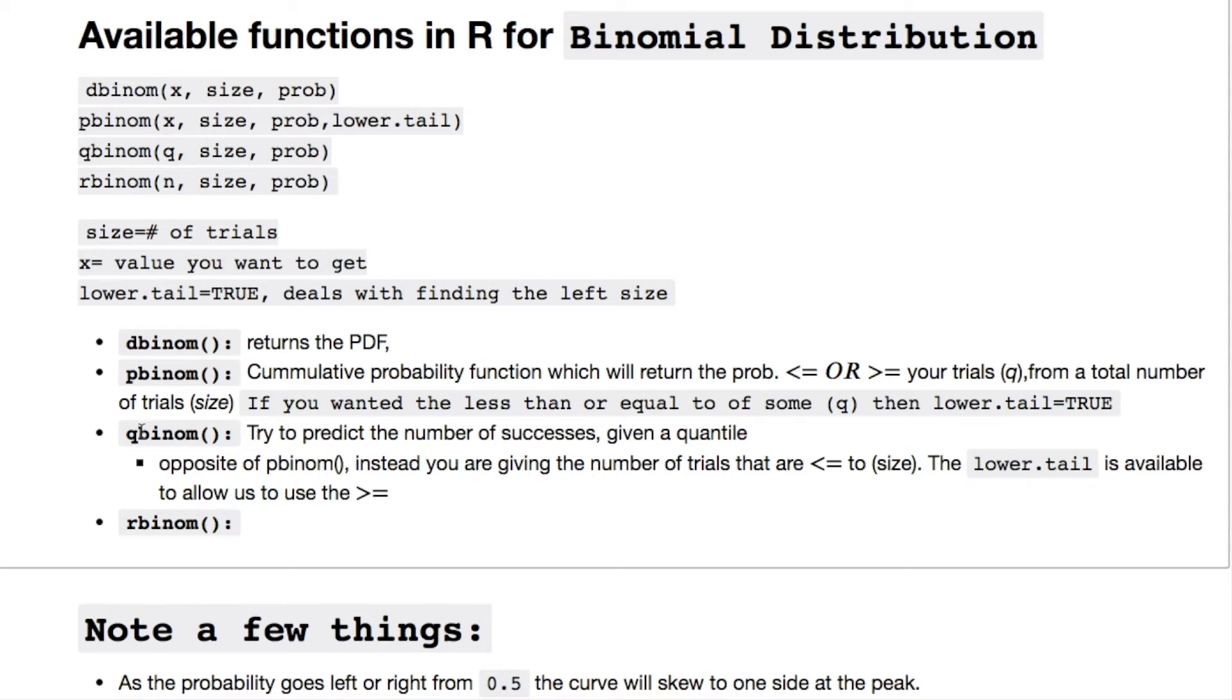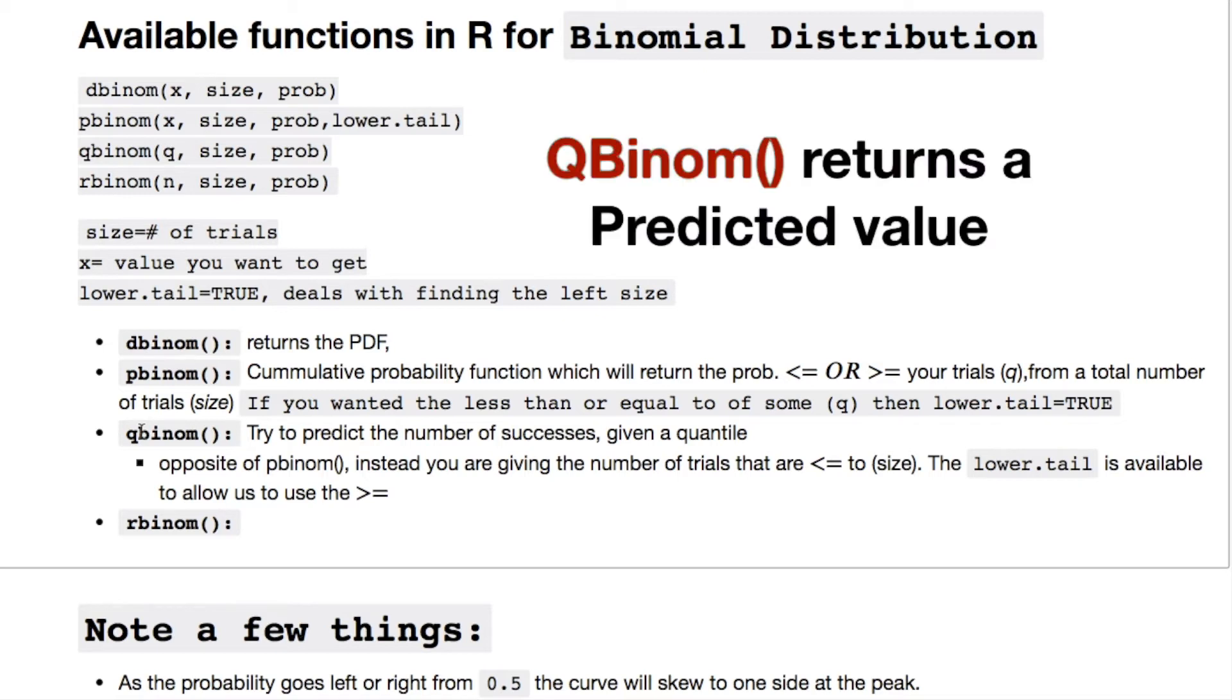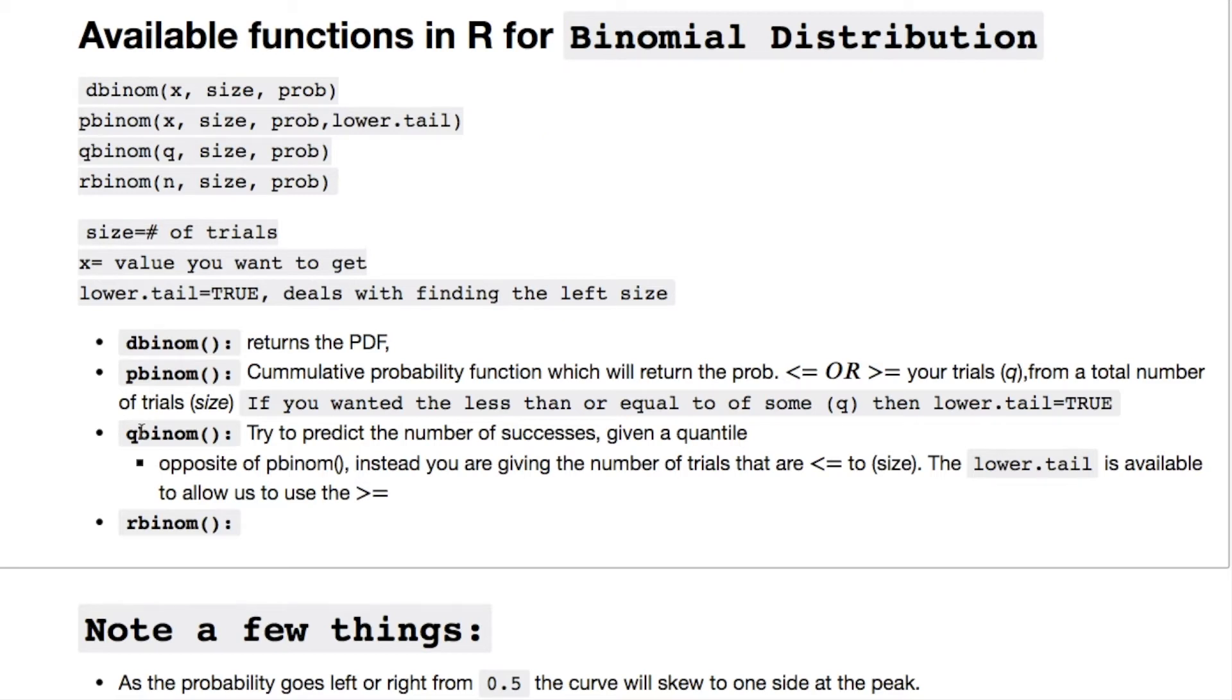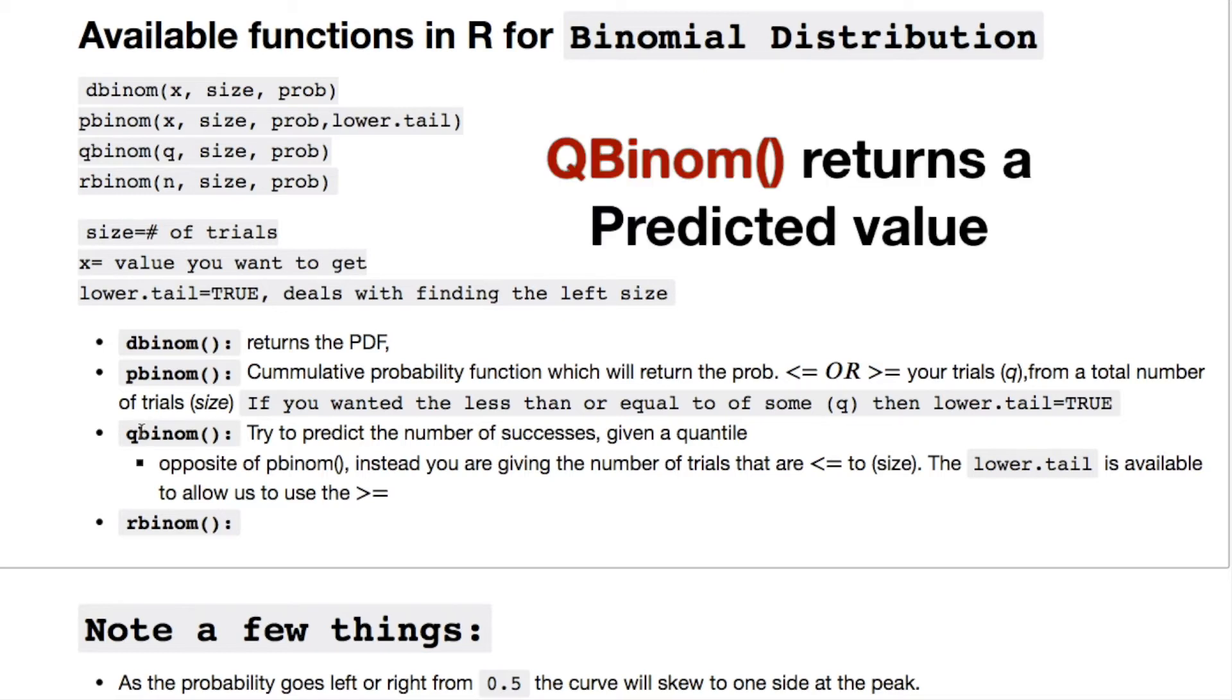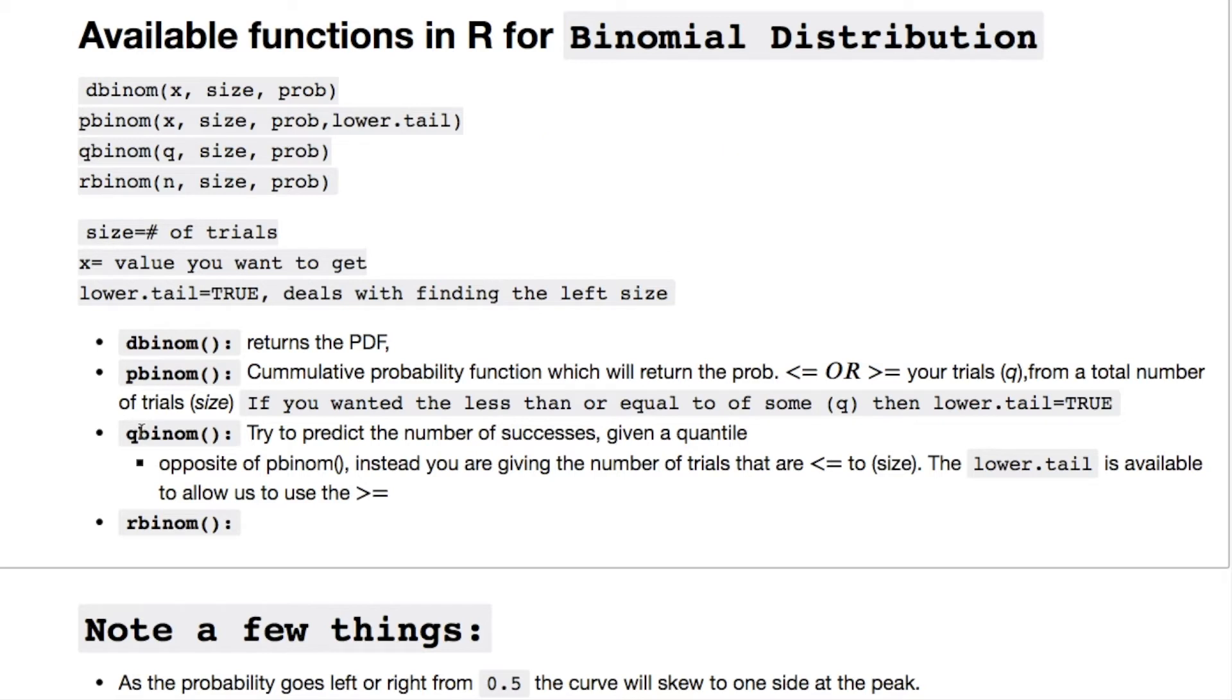You have your q which is dealing with your quantiles and that's letting you predict a number of successes. So you throw in some quantile like the lower 10 percent, 0.10, or the upper 60 percent 0.6, or the upper 10 percent 0.9. You chuck all that in with your probability of success and whatever your trials are, and it spits out a number which is a predicted number of how many successes you'll have with that data.